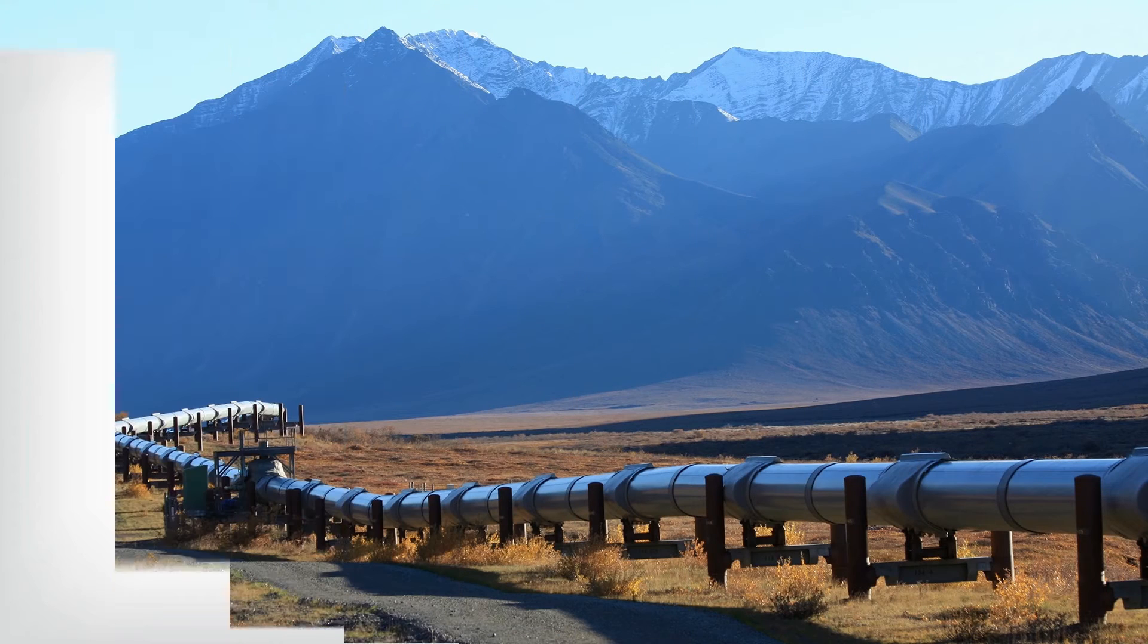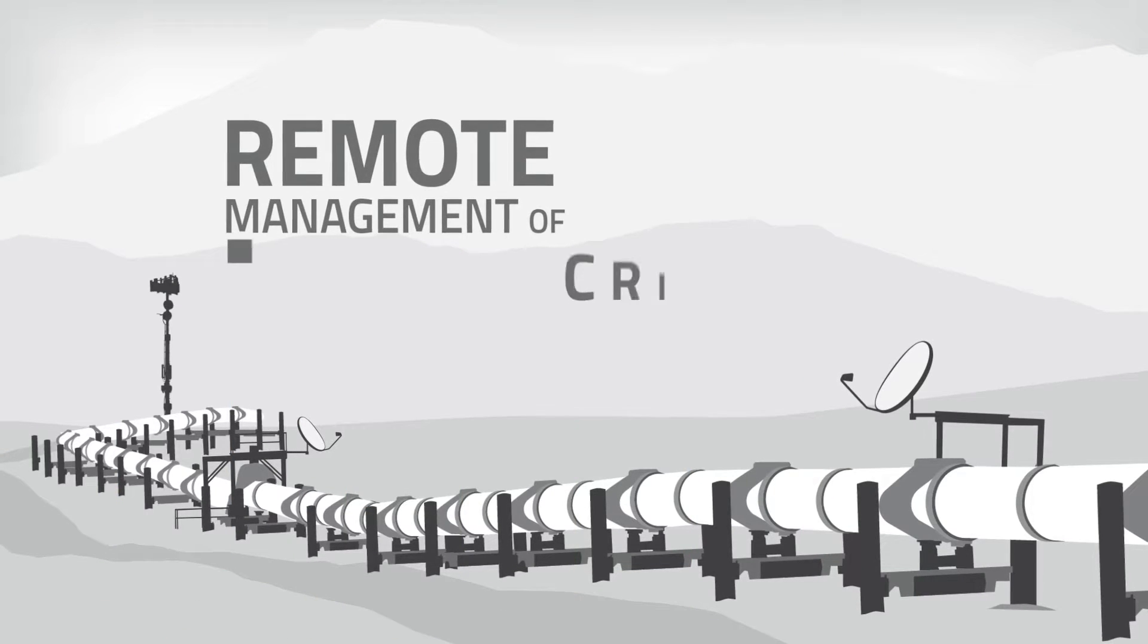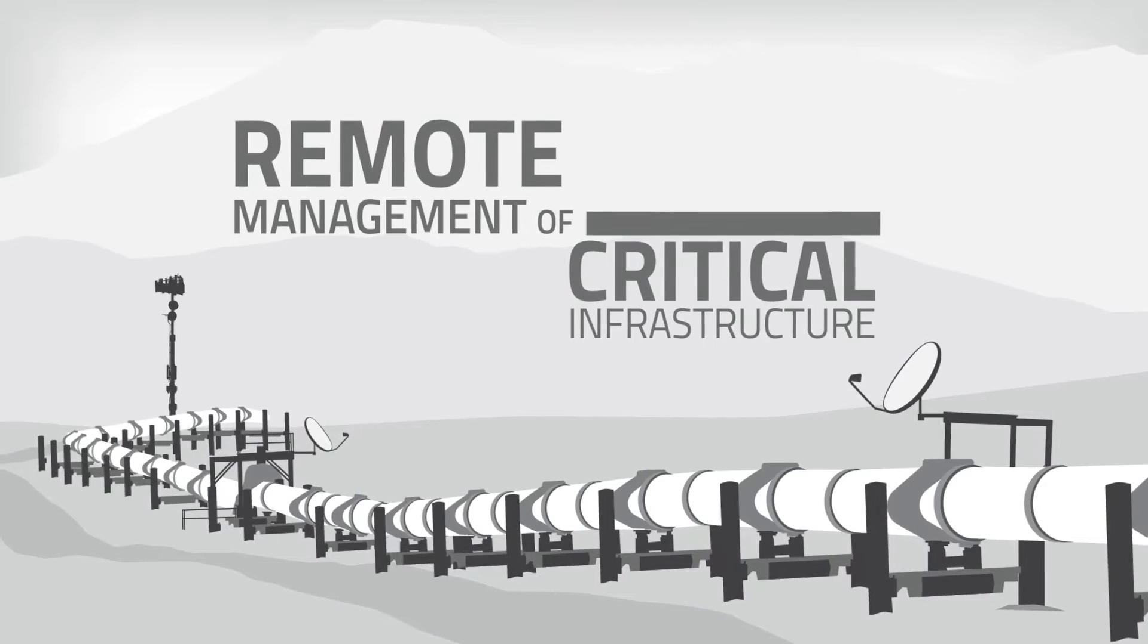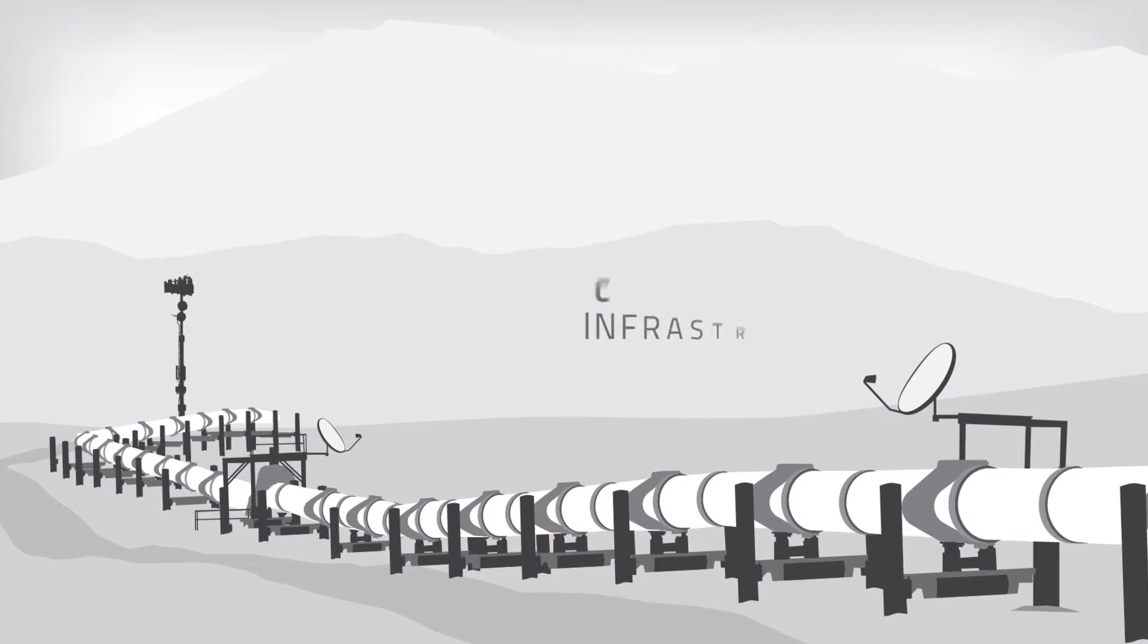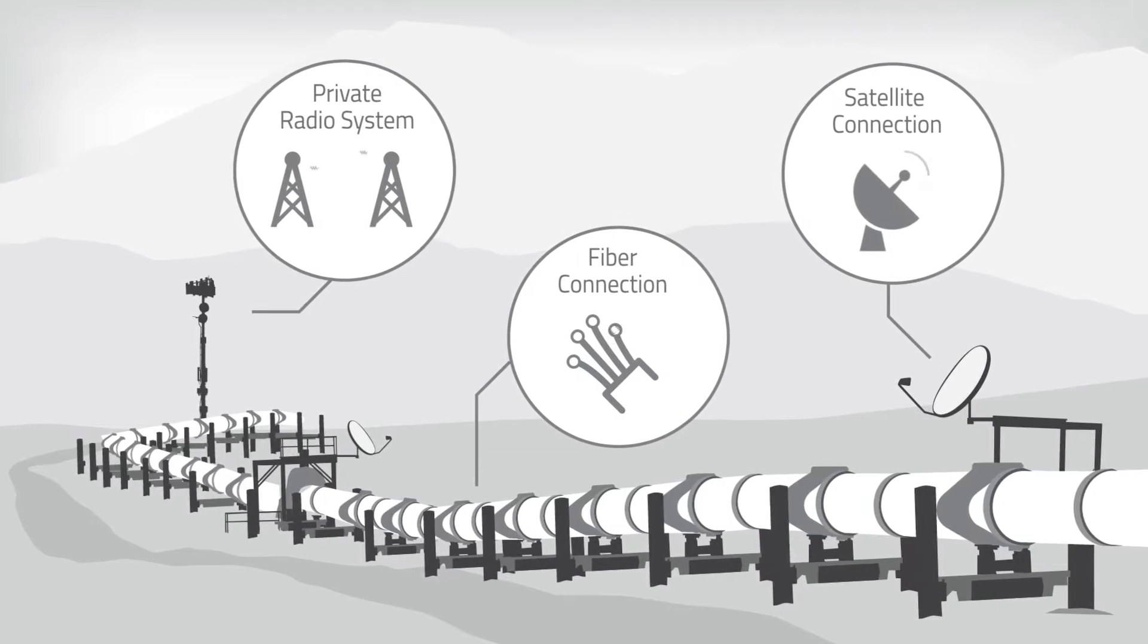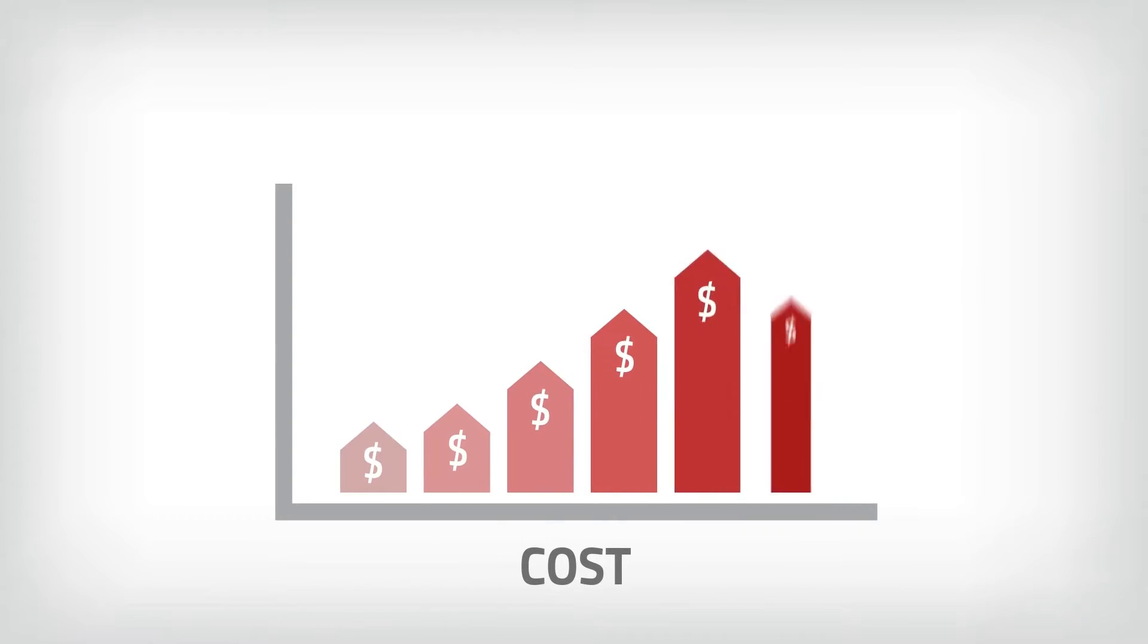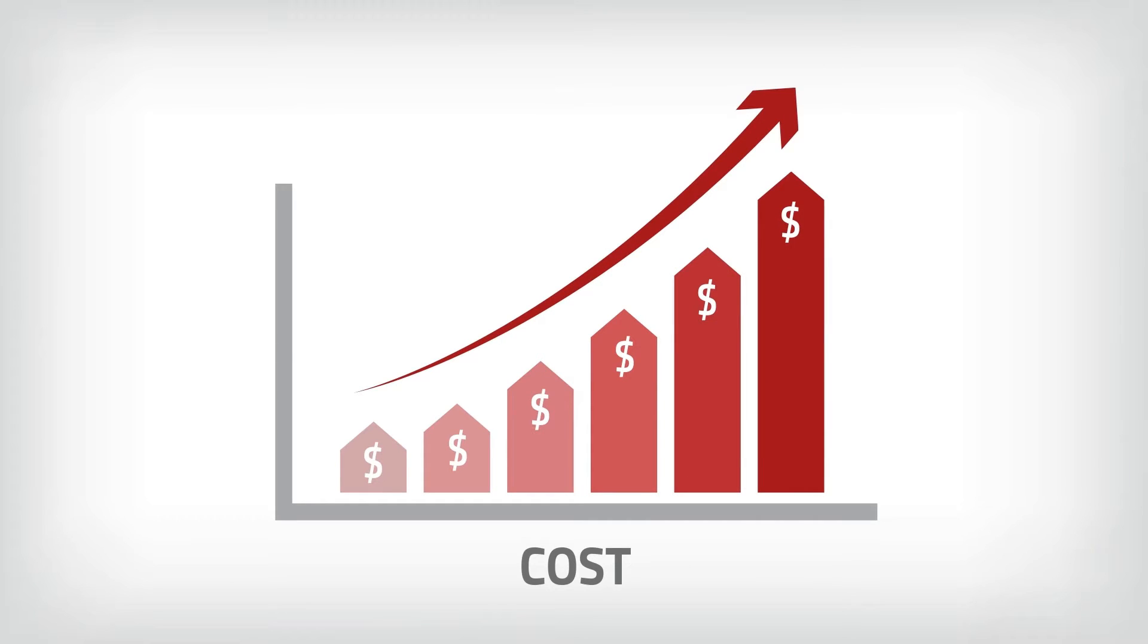So how have these challenges been addressed in the past? To date, organizations have addressed remote monitoring and management of their critical infrastructure in a number of ways, including fiber-optic networks, private radio systems, and satellite communications. While these solutions have provided connectivity, they are typically expensive and often difficult to deploy and maintain.